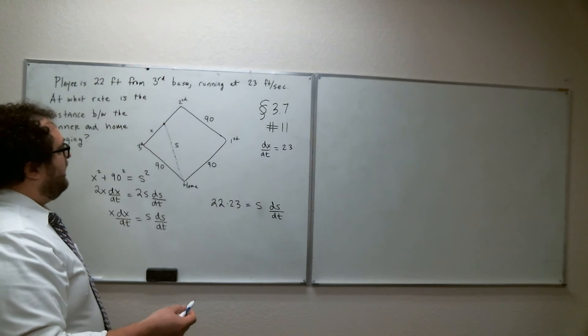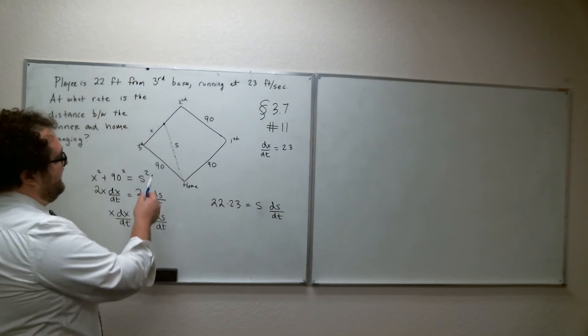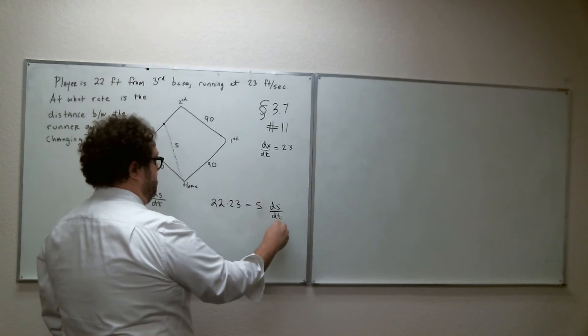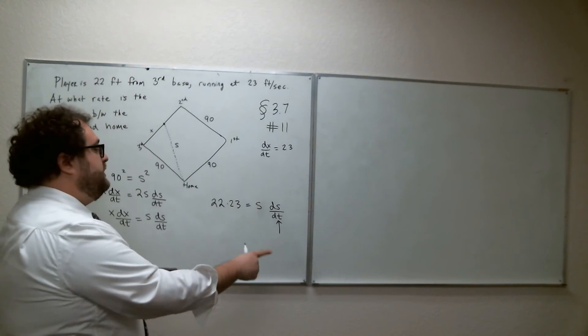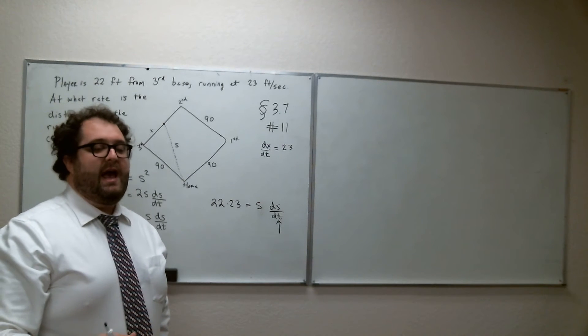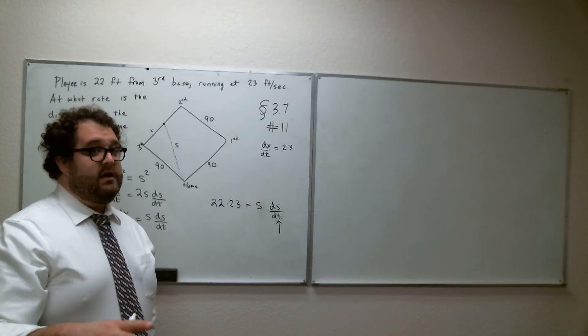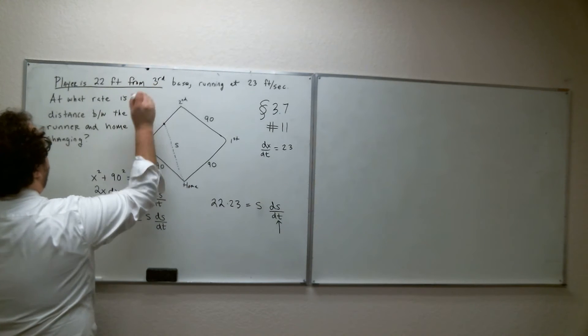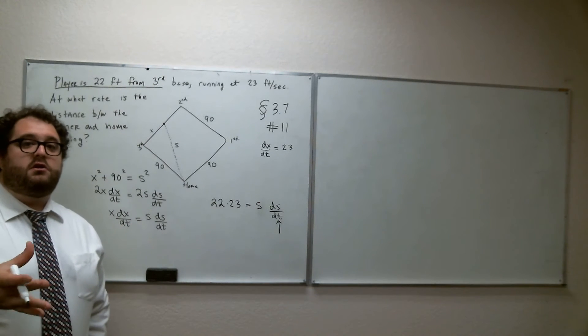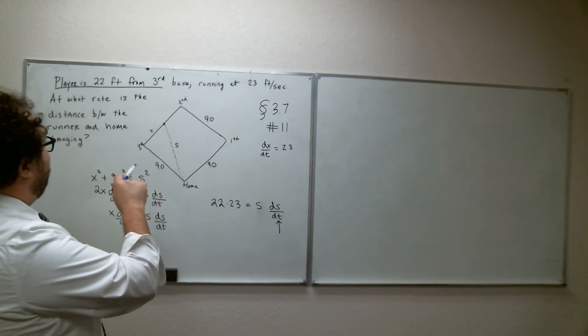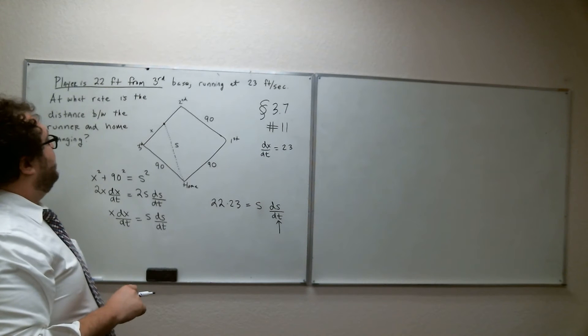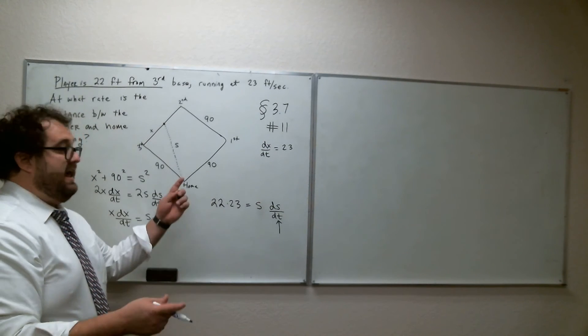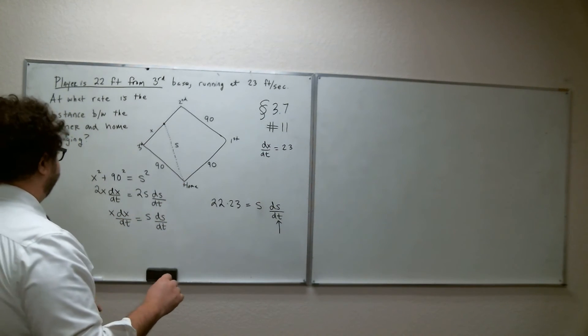Which one am I solving for? Well, I want to figure out how fast is this distance, S, changing. So that's what I'm solving for. So I don't want to find anything to substitute for that, but I do need to figure out what S is. And what usually happens in these Pythagorean-type situations is that I need to consider this specific situation. 22 feet from third base. Consider that specific right triangle, and I think if we consider that specific right triangle, when the player's 22 feet from third base, we know that this side is 90, we'll then be able to figure out what S is in that particular situation.